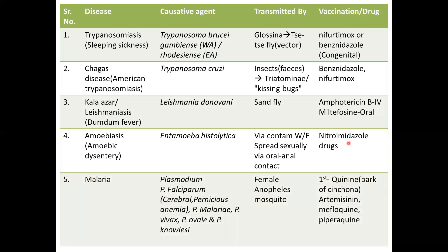Next up is malaria, caused by five different Plasmodium strains. Plasmodium falciparum causes the most severe form, involving cerebral damage — it is also the causative agent for cerebral fever and pernicious anemia. The other species are Plasmodium malariae, Plasmodium vivax, Plasmodium ovale, and Plasmodium knowlesi. Transmission is via the female Anopheles mosquito. The first-ever drug against malaria was quinine, obtained from the bark of the cinchona plant — this is an important MCQ fact.